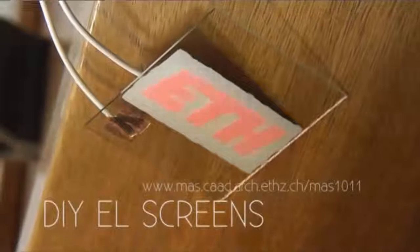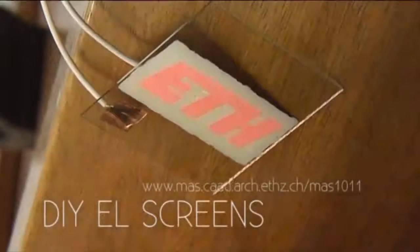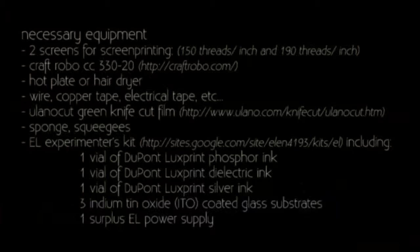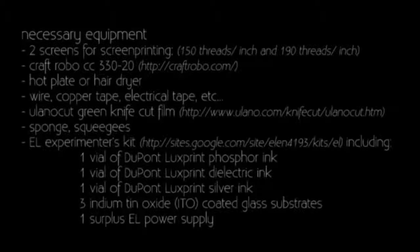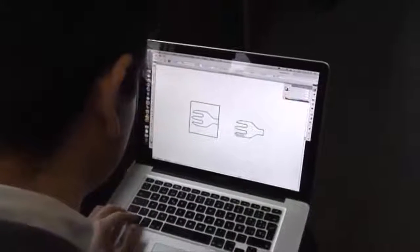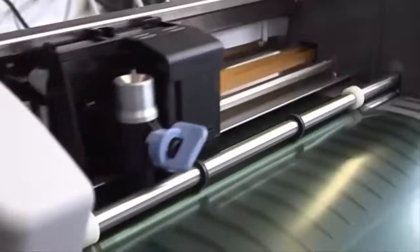Do-it-yourself electroluminescent screens. Necessary equipment. Step 1: Design simple shape according to size of glass substrate.